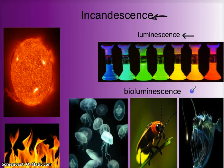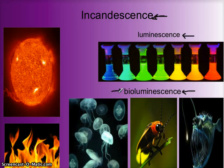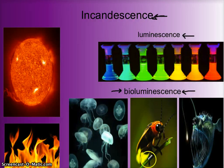This leads us to bioluminescence. Luminescence means producing light that isn't very hot, and 'bio' of course means life. So bioluminescence is the production of light by living organisms. Lightning bugs, jellyfish, and anglerfish all utilize chemical reactions in their bodies to produce luminescence.